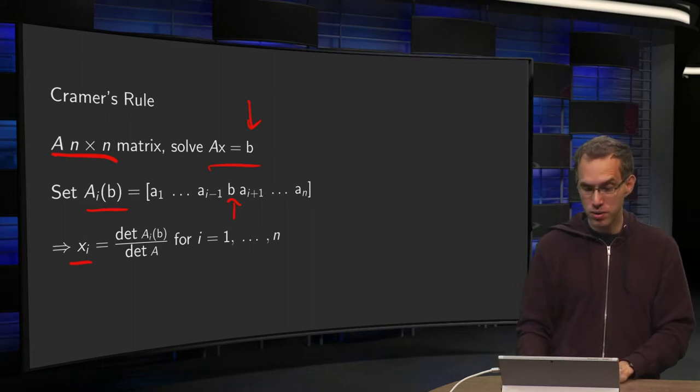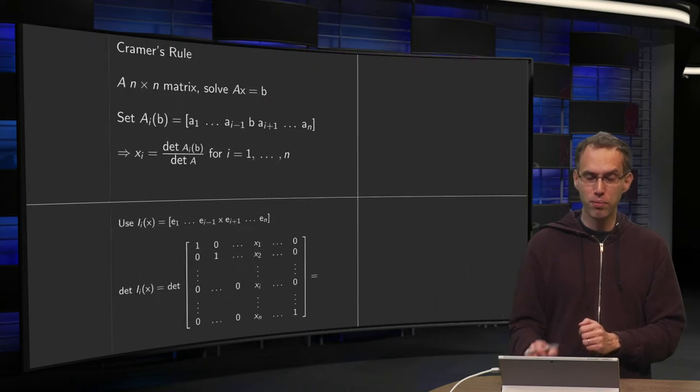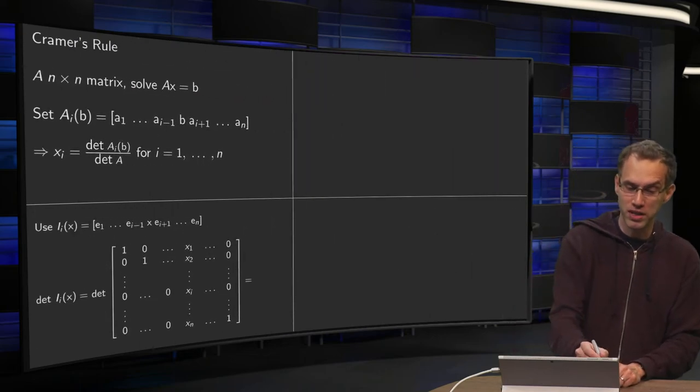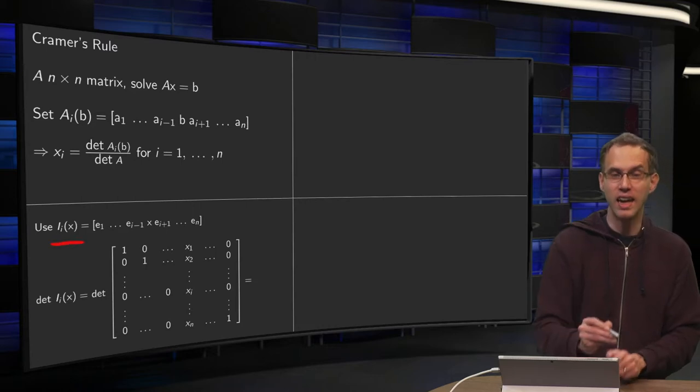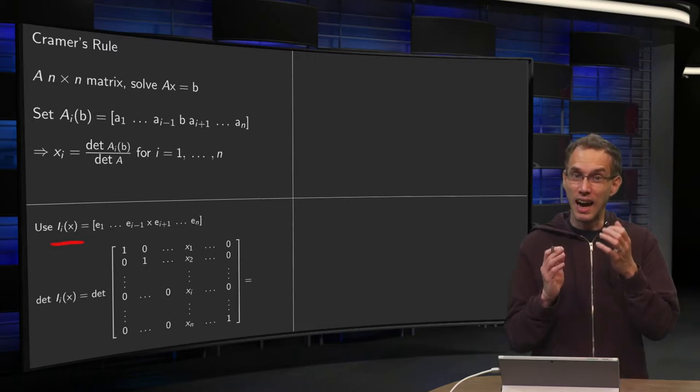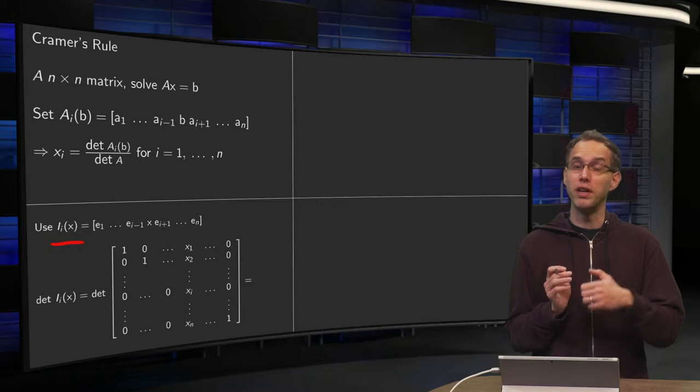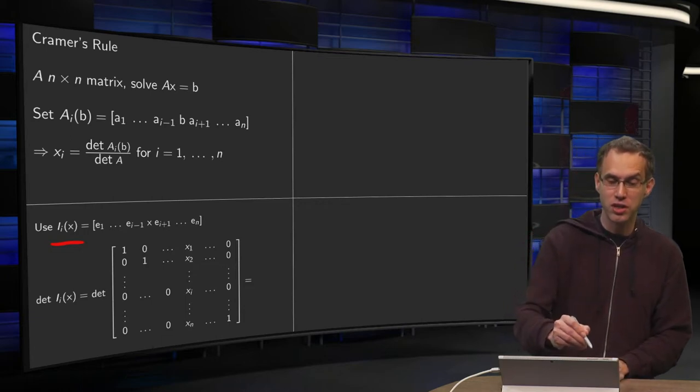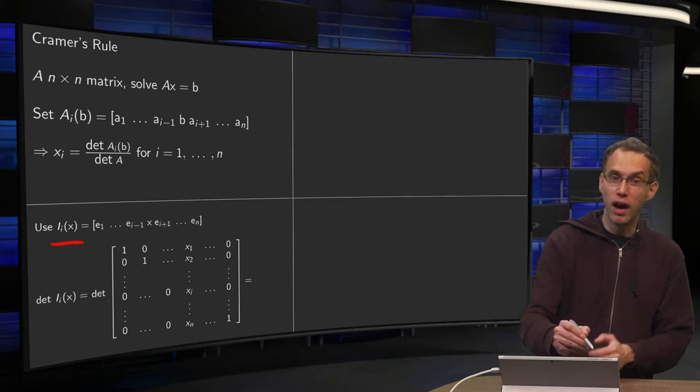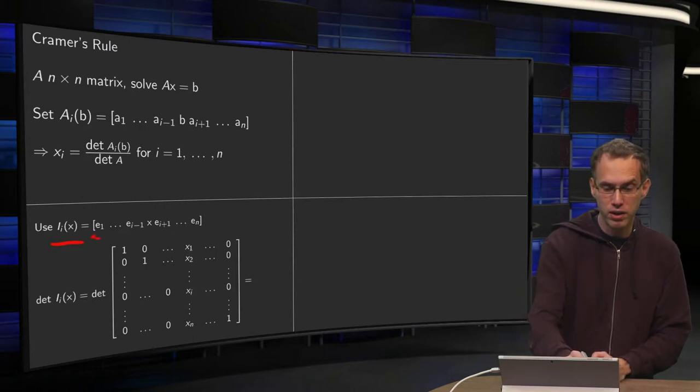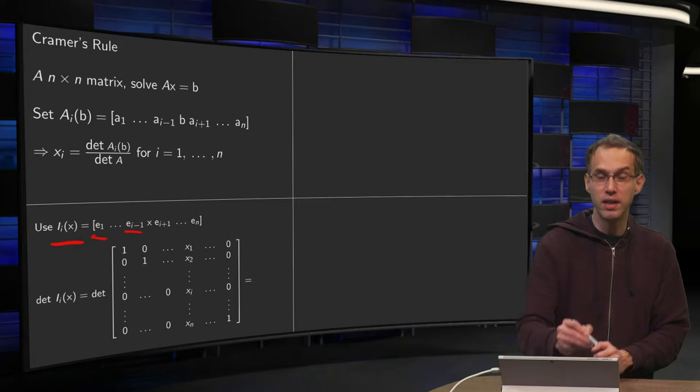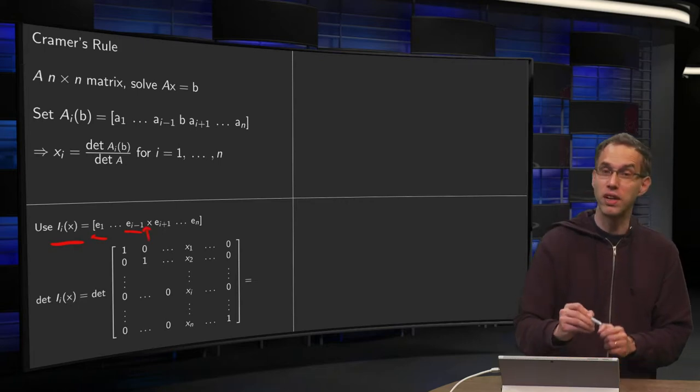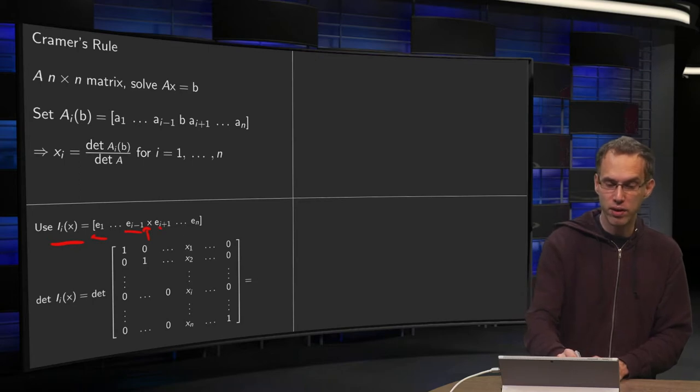Now, why does it work like this? We will form, first to see why it works like this, we will first form an auxiliary matrix I_i(x), which is the identity matrix where we replace the ith column by the vector with the unknowns x. So what do we do? We have as first column e_1, and then e_2 and so on, up to e_i minus one. Then we put the vector x containing all unknowns, and then we go on.